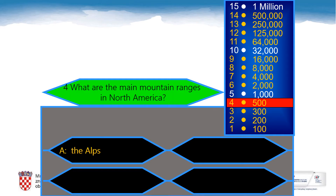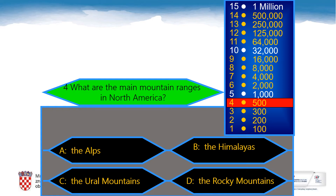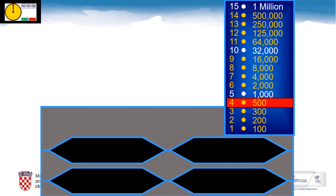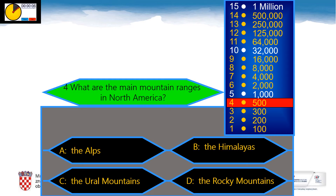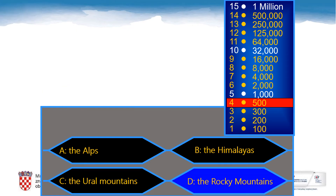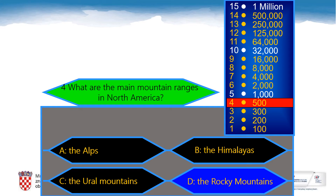The fourth question for 500 points is: What are the main mountain ranges in North America? A: The Alps, B: The Himalayas, C: The Ural Mountains, D: The Rocky Mountains. The correct answer is the Rocky Mountains. Well done!